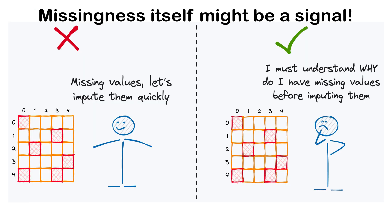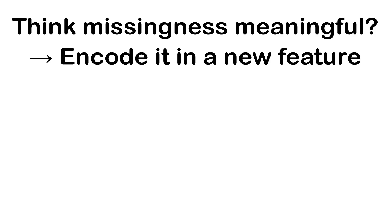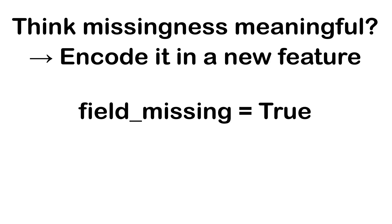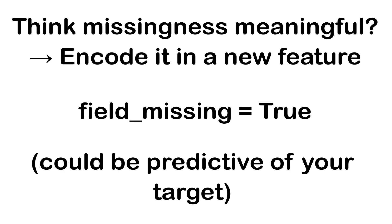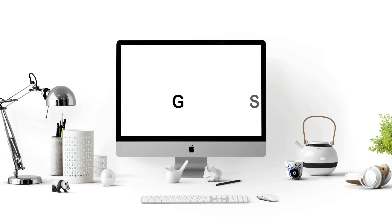Remember, missing values themselves might contain information. A missing income field could indicate unemployment — that's a signal, not noise. If you think the missingness is meaningful, encode it in a new feature, say a boolean feature called 'missing field', which itself could be predictive of your target variable.